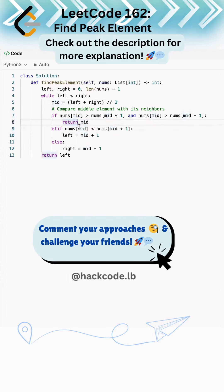We check if nums[mid] is less than nums[mid+1]. That means the peak element lies in the right half, so we shift the search to the right half only. In the other case where the peak element lies in the left half, we make right equal to mid minus 1.